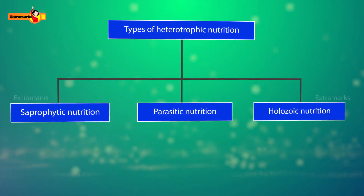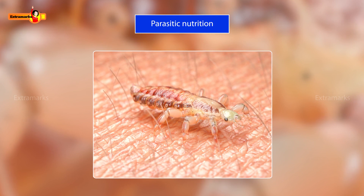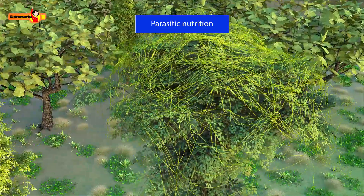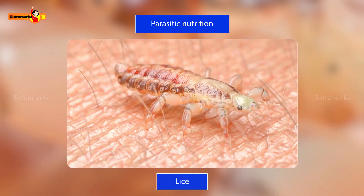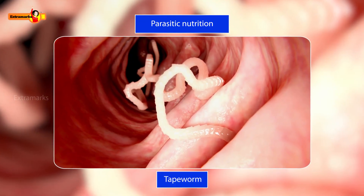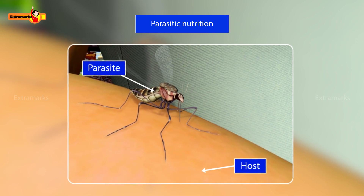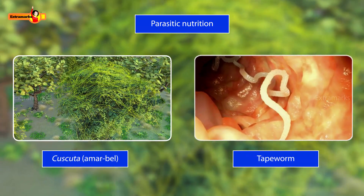Now let us discuss the parasitic mode of nutrition. Have you ever wondered how lice get their nutrition? They suck blood from another organism's body. The mode of nutrition in which an organism derives its food from the body of another organism without killing it is called parasitic nutrition. Examples of parasites include Cuscuta, Amar bel, orchids, ticks, lice, leeches, and tapeworm. The organism on which a parasite depends is called the host. Parasites extract nutrients from the host and are harmful to its health. The host is never benefited, and both animals and plants may serve as hosts.